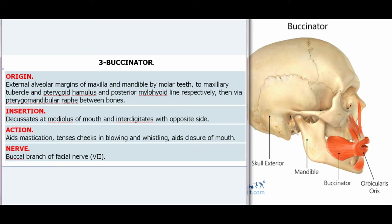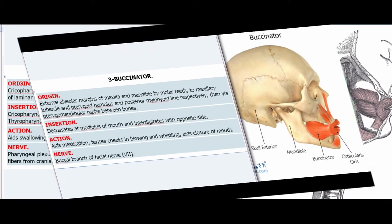3. Buccinator. Origin: External alveolar margins of maxilla and mandible by molar teeth, to maxillary tubercle and pterygoid hamulus and posterior mylohyoid line respectively, then via pterygomandibular raphe between bones. Insertion: Decussates at modiolus of mouth and interdigitates with opposite side. Action: Aids mastication, tenses cheeks in blowing and whistling, aids closure of mouth. Nerve: Buccal branch of facial nerve (VII).